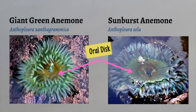On the sunburst anemone, they actually have radiating lines on their oral disc, while the giant green do not. Those radiating lines look like the sun's rays, and so therefore it gives the name sunburst anemone.